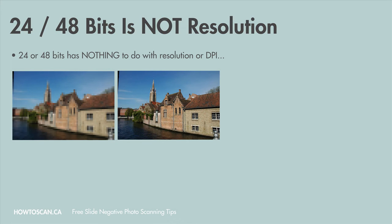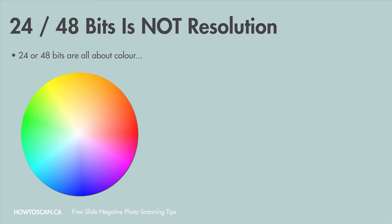The first thing you need to know is that bits have nothing to do with resolution or DPI. When I first started scanning, I had no idea what bits were — I thought they had something to do with resolution. But after 10 years of scanning for a living, I figured it out. Bits have nothing to do with resolution. Bits are about color. Once you know this, you'll know when it's best to use 24 or 48 bits when scanning, and you won't be wasting your time with your scan project.